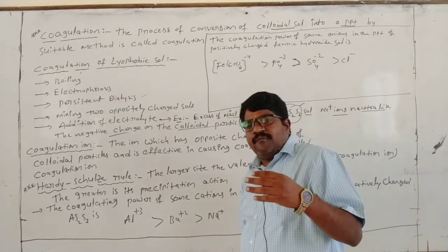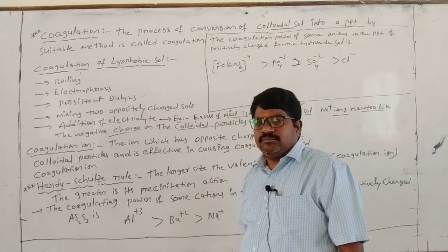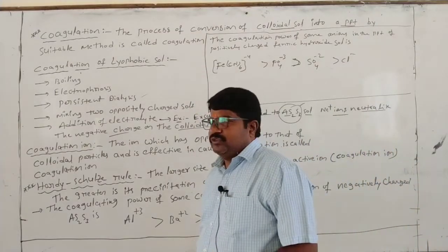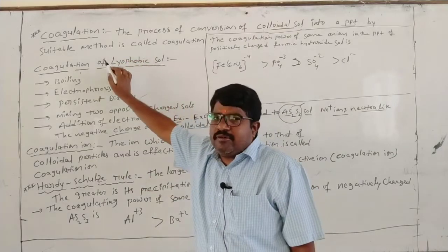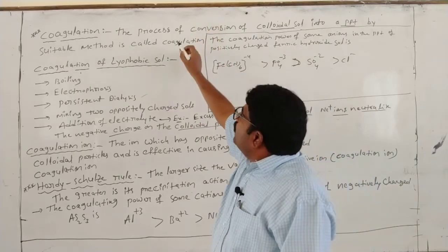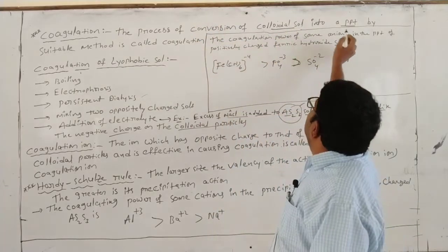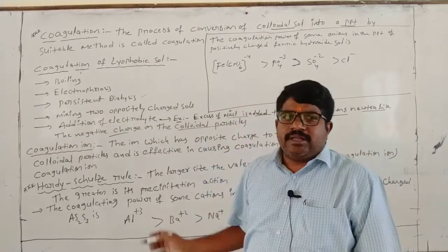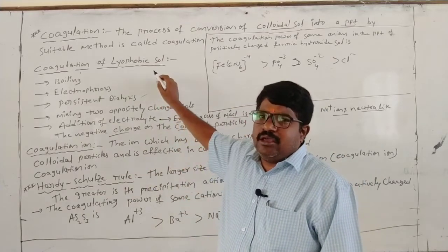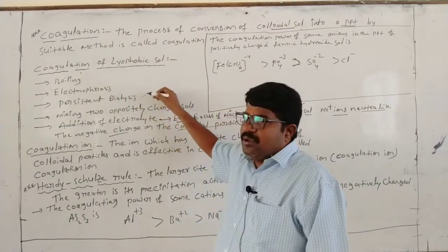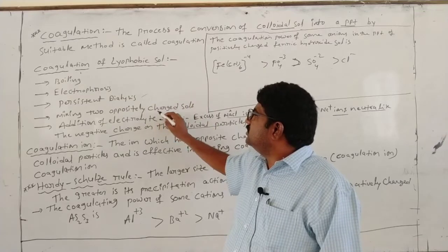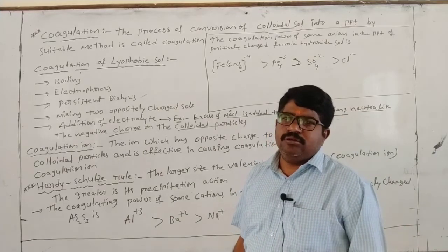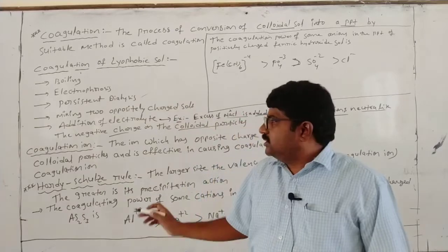These are the methods to convert colloid particles into precipitate — that settling of particles is coagulation. This is very important. The process of conversion of colloidal solution into precipitate by suitable methods is called coagulation. For one mark, write any one method; for two marks, write any two methods.